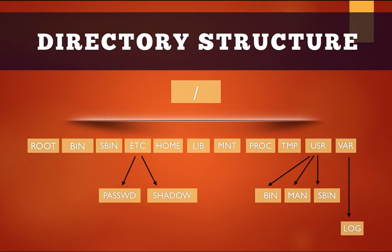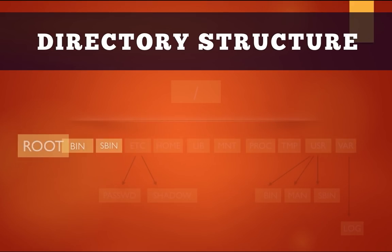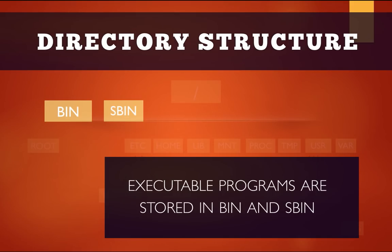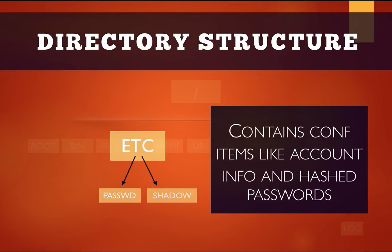First up is the root subdirectory. Root is like the administrator in Windows — it has all the privileges; it can read, write any file, or execute any program. Under the root subdirectory you have the root account's home directory. Next up is the sbin and bin directory: bin contains essential command binaries, whereas sbin contains essential system binaries. Next is the etc directory which contains configuration files.